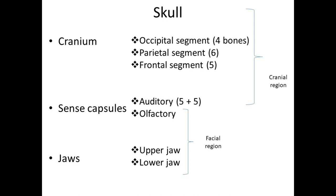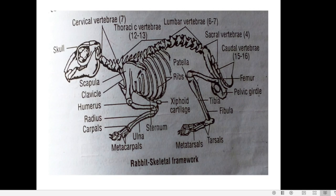The skull of rabbit is divisible into two regions: the cranial region and the facial region. The cranial region protects the brain. The facial region consists of the sense capsules and the jaws. The cranial region is divisible into three segments: the occipital segment (four bones), the parietal segment (six bones), and the frontal segment (five bones). The sense capsules are auditory and olfactory capsules. The upper jaw is called the maxilla and the lower jaw is called the dentary.